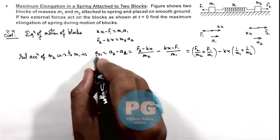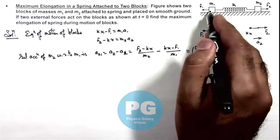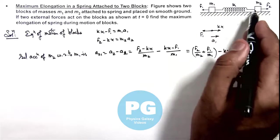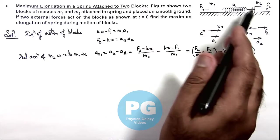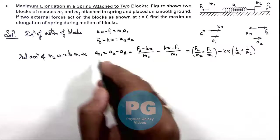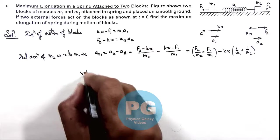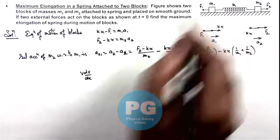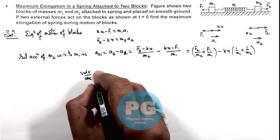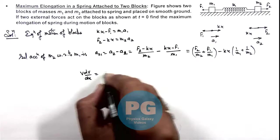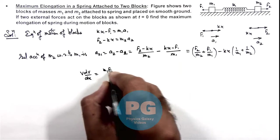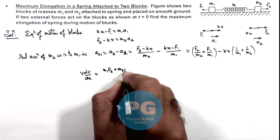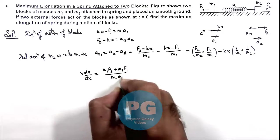Now this acceleration of 2 with respect to 1, due to which the spring is getting elongated here because 2 is accelerating with respect to 1, which can be written as vdv by dx. Here v is the velocity of m₂ with respect to m₁. And the same is given by, this is m₁f₂ plus m₂f₁ upon m₁m₂.